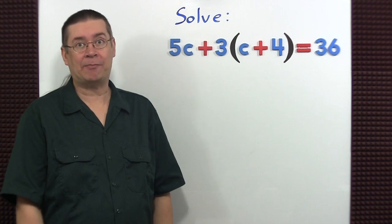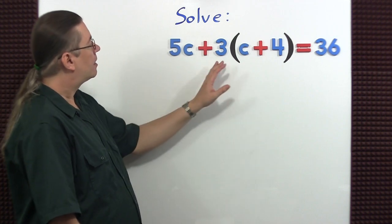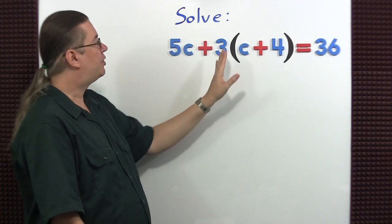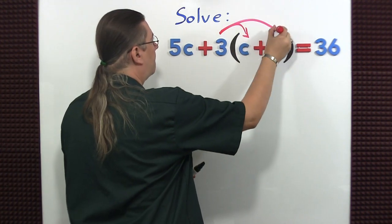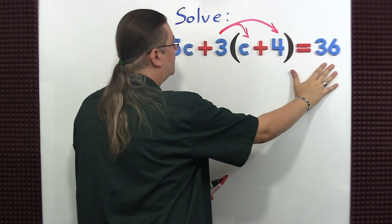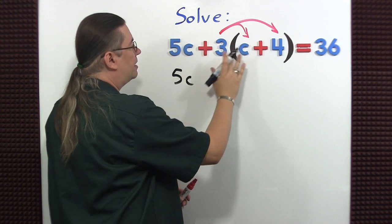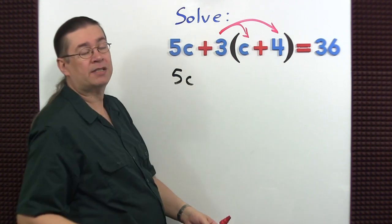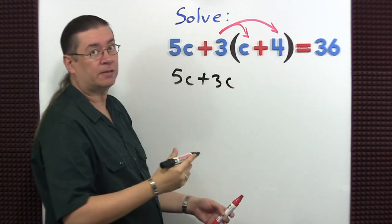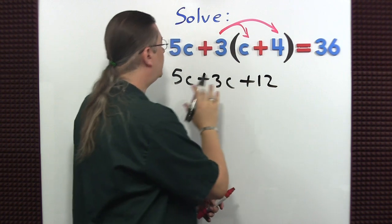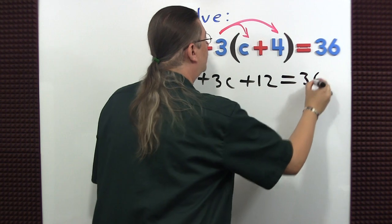Our goal in this example is to solve this equation by using the distributive property. I want to remove the grouping symbol, the parentheses, by distributing the 3 to each of these two terms. And then the other things stay the same. 5c. Positive 3 times a positive c is positive 3c. Positive 3 times a positive 4 is a positive 12. Notice how I really emphasize the signs because I don't want to make any mistakes. 5c. This is equal to 36.